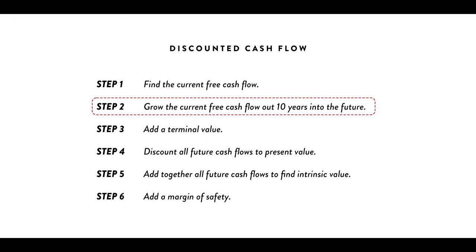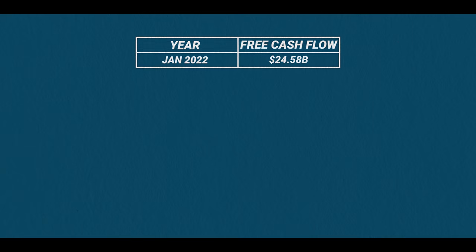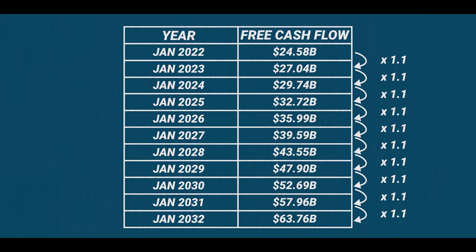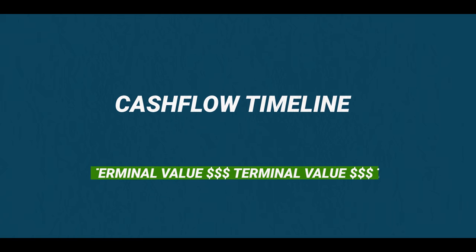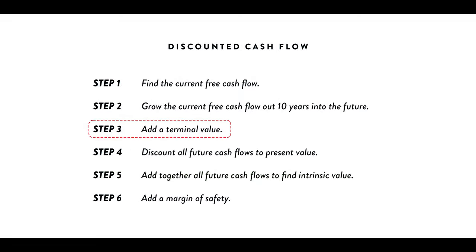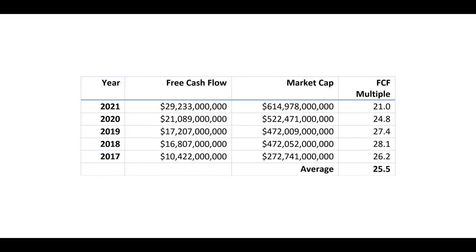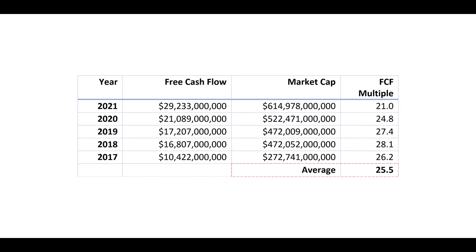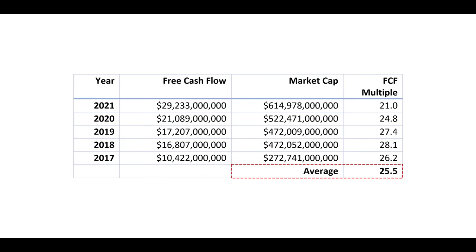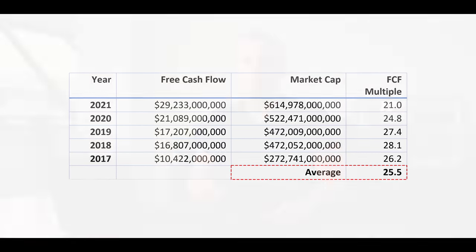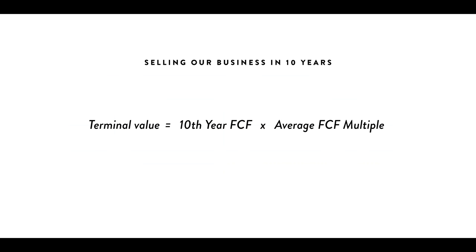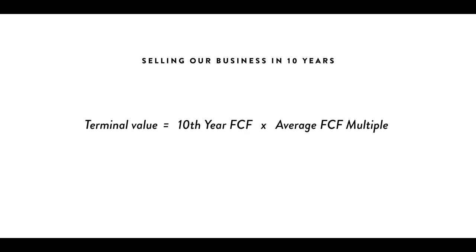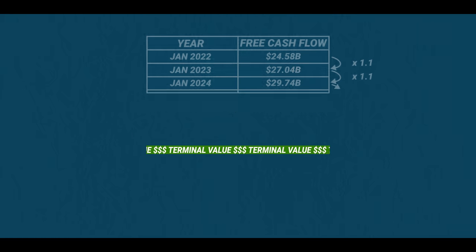So let's now grow the free cash flow out by 10% per year for the next 10 years — just multiply the previous year's free cash flow by 1.1. And then after that, we're going to sell this thing. Of course, you don't actually have to sell it in real life, but for the calculation we imagine selling the business in 10 years. This is called our terminal value. So what can we sell it for? Let's look at what multiple of free cash flow the business has been selling for over the past five years. If we take the average, we could probably sell the business for that free cash flow multiple in 10 years' time.